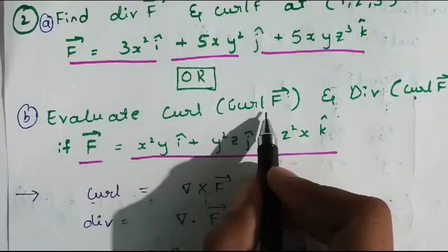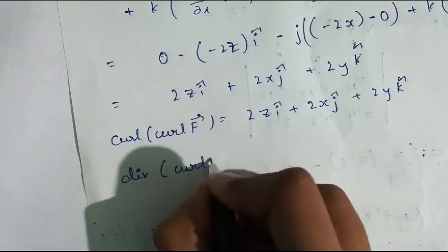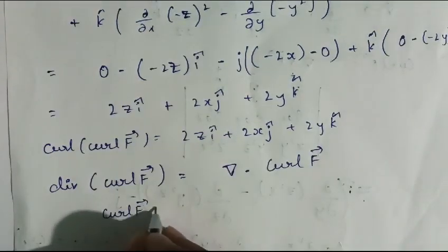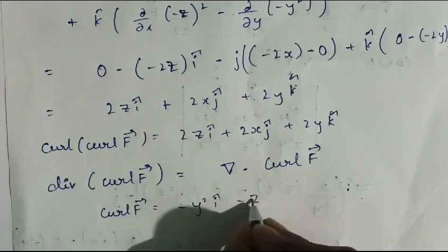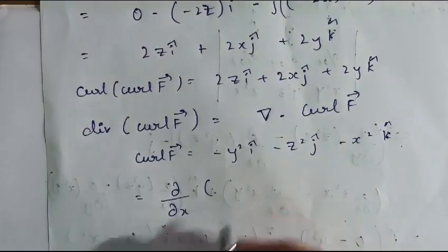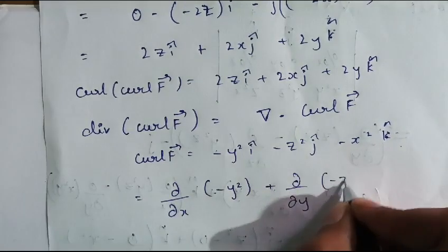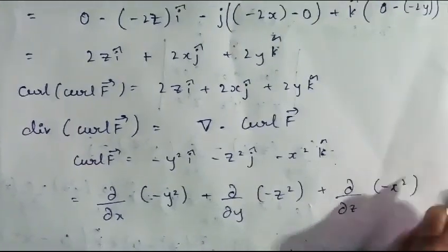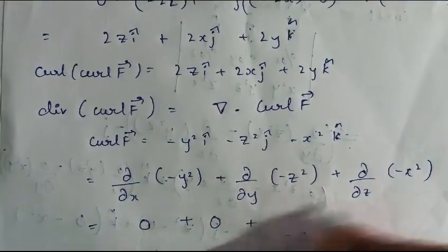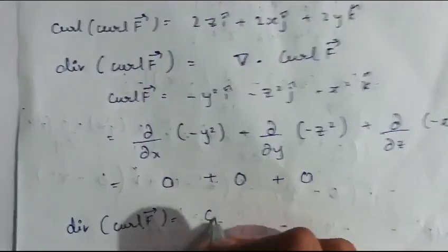Now we find the divergence of curl of f. Divergence of curl f = del dot (curl f) = del dot (-y²î - z²ĵ - x²k̂). This gives (∂/∂x)(-y²) + (∂/∂y)(-z²) + (∂/∂z)(-x²). Differentiation of y² with respect to x is 0, z² with respect to y is 0, and x² with respect to z is also 0. Therefore, divergence of curl f = 0.